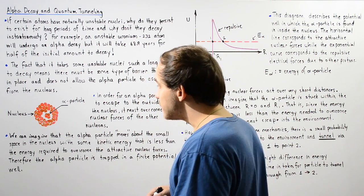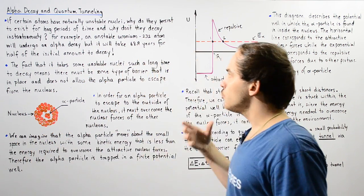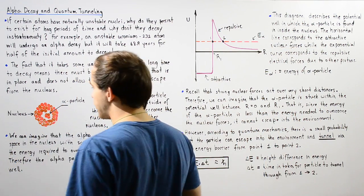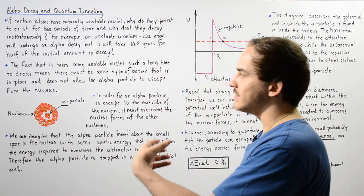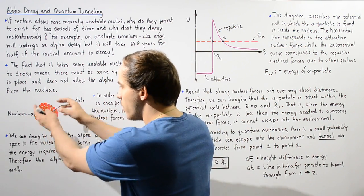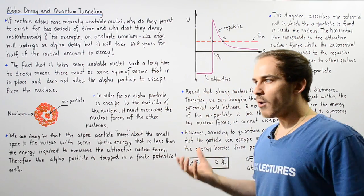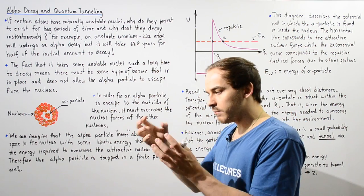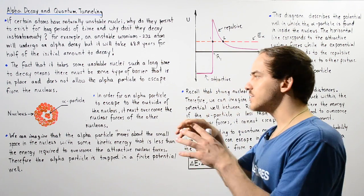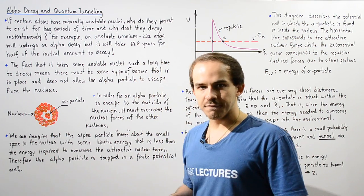Let's look at the following diagram that describes our uranium nucleus. We have the nucleus consisting of nucleons — the protons and neutrons. The alpha particle is found somewhere within this region. Remember, an alpha particle is a bundle of two protons and two neutrons held together by strong and weak nuclear forces.